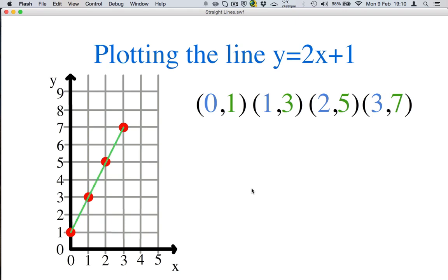So we've drawn our 4 points. And then we take our ruler and draw a nice line through them. Right. Let's have a look at one last line. And this one is the trickiest of them all.